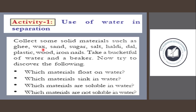Ghee and wax float on water. Sugar and salt dissolve. Dal also dissolves. Plastic floats. Iron nails sink. Which materials sink in water? Iron, sand, and dal sink. Which materials are not soluble in water? Ghee, sand, plastic, wood, wax, and dal are not soluble in water.